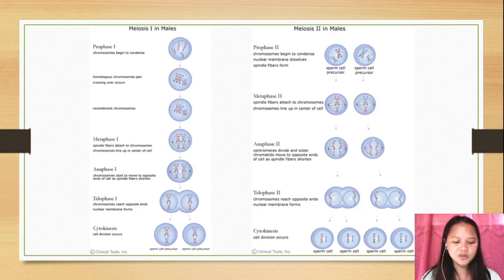Leptotene: chromosomes start to condense. Zygotene: homologous chromosomes become closely associated to form pairs of chromosomes consisting of four chromatids. Pachytene: crossing over between the pairs of homologous chromosomes to form chiasmata. Diplotene: homologous chromosomes start to separate but remain attached by chiasmata. Diakinesis: homologous chromosomes continue to separate and chiasmata move to the end of the chromosomes.